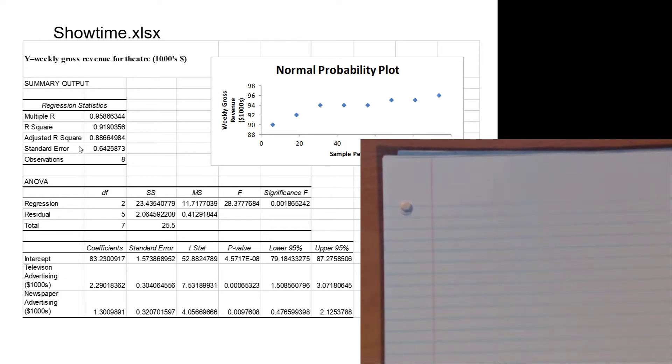Let's start at the top. We see an adjusted R-squared of 0.886649484, lots of digits there, so roughly 89 percent of the variation in weekly gross revenue, which is our y, is explained by this model. That's pretty good.